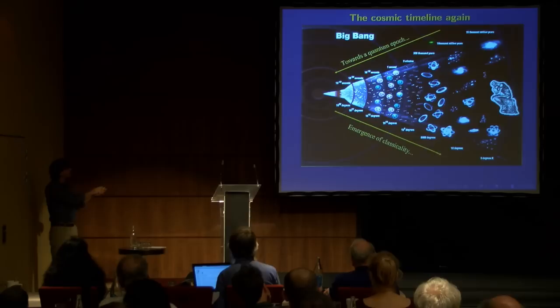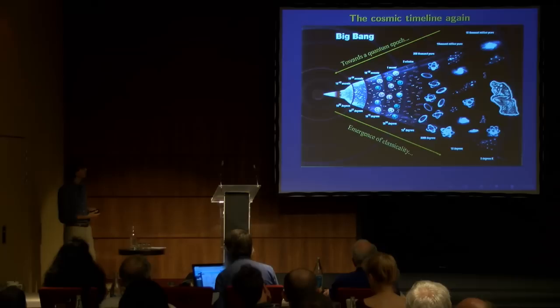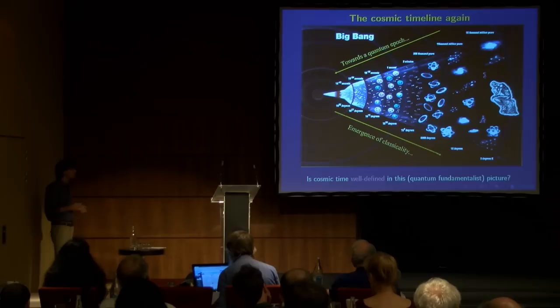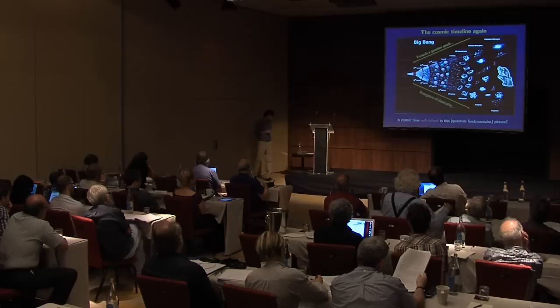So, let's take a look at the cosmic timeline again. Usually, one would say things like, the further we go back in time, the more quantum it becomes. Of course, there's quantum all the way. There's also quantum mechanics where we are now, obviously. But it seems as it gets more quantum at the onset of inflation, at least, and definitely quantum gravity. And on the other hand, you're supposed to have some kind of emergence of classicality within this picture. But the question stands still. Namely, is cosmic time well-defined in this quantum fundamentalist picture? That is, assume that everything is quantum. Can you then derive cosmic time? Or can you even talk about, in a sensible way, this scheme where you are going back and forth in cosmic time?